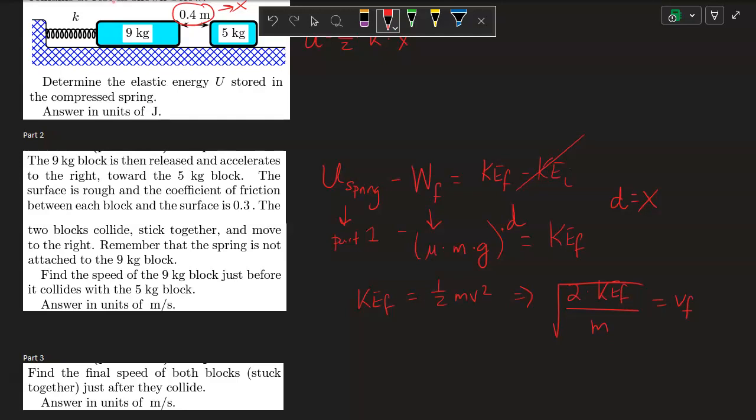So this will give you KE and then yes, you still do the same process. You take the square root of 2 times KE final over m to give you the final velocity.